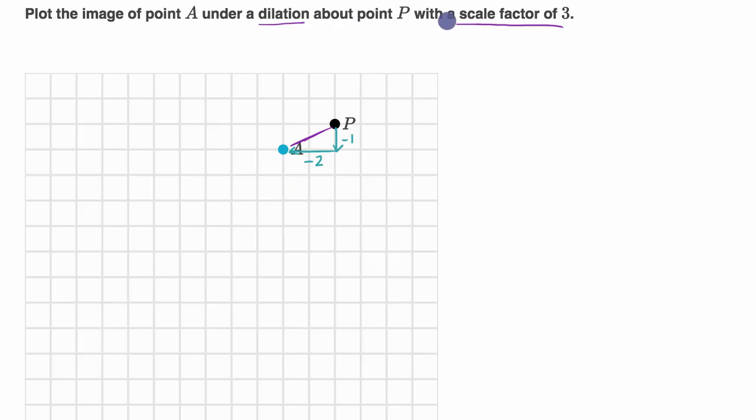And so if you dilate it with a factor of three, then you're going to want to go three times as far down, so minus three, and three times as far to the left, so you'll go minus six.